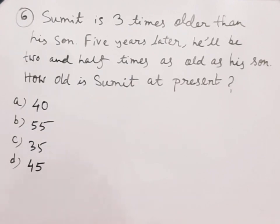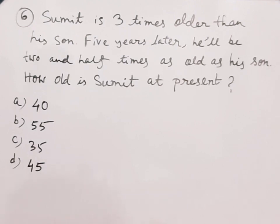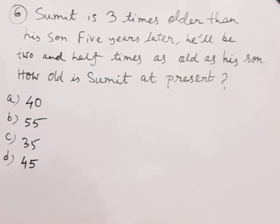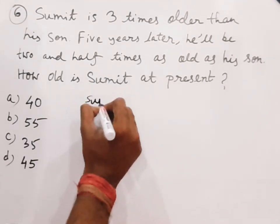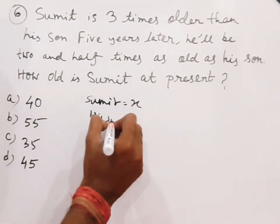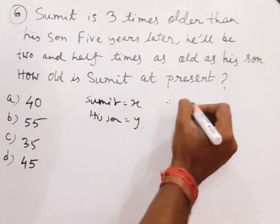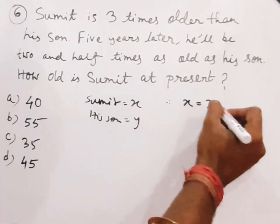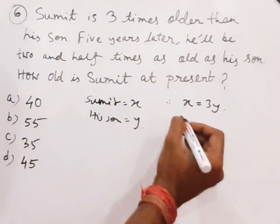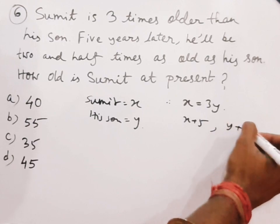Now the question is: Sumit is 3 times older than his son. 5 years later he will be 2 and a half times as old as his son. How old is Sumit at present? So let Sumit's age equal x years and his son's age equal y years. The first equation is x equals 3y. After 5 years the ages will be x plus 5 and y plus 5 respectively.